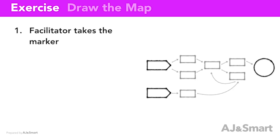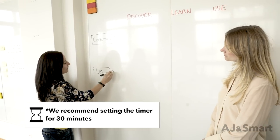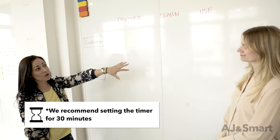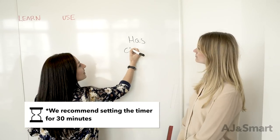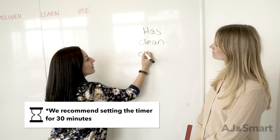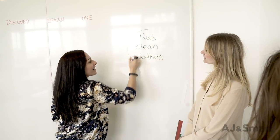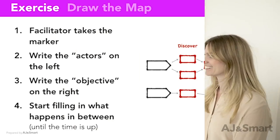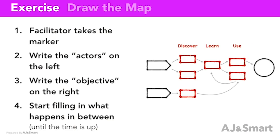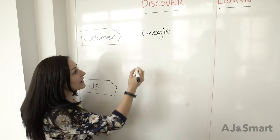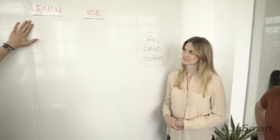The exercise is generally pretty simple, but it can be tricky for you as a facilitator. The general exercise is: you start with the marker in your hand, write the actors on the left — the users, the people who interact with the system — the objective of the users on the right — what's the end of their journey, what they need to do — and then complete that journey through your product or service, filling in the actual steps in between.